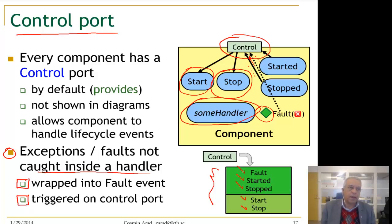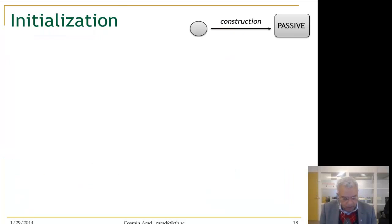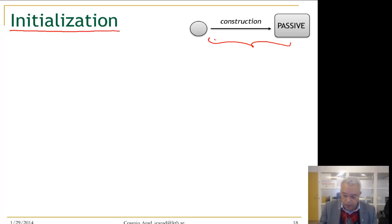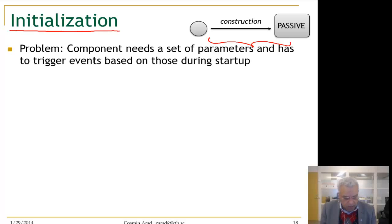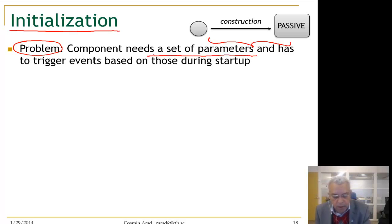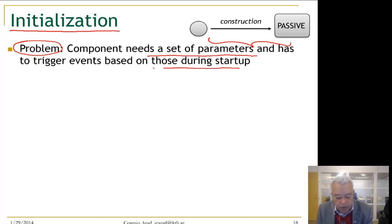There is one important thing to understand while initializing components: how to pass parameters or initial values to a component at construction time. This is called the initialization phase. Components sometimes need a set of parameters and need to trigger events based on them during startup. We want to make sure that parameters are installed in a component before any events are triggered.